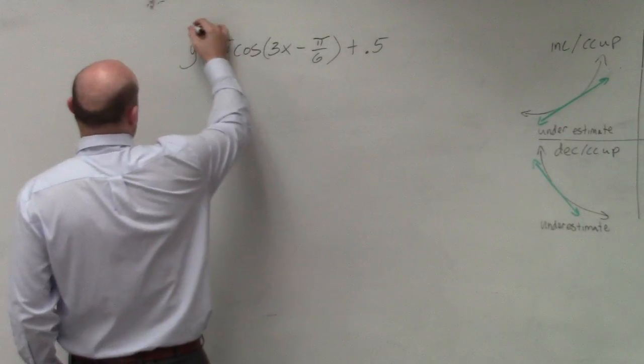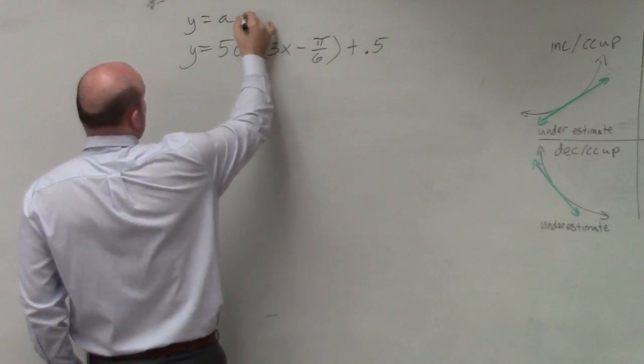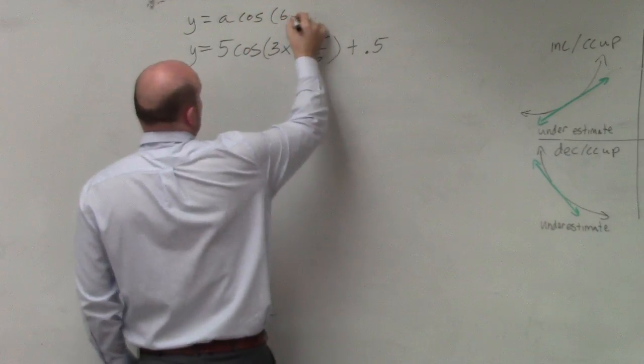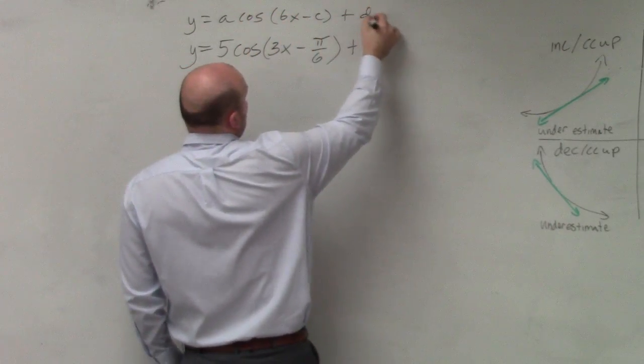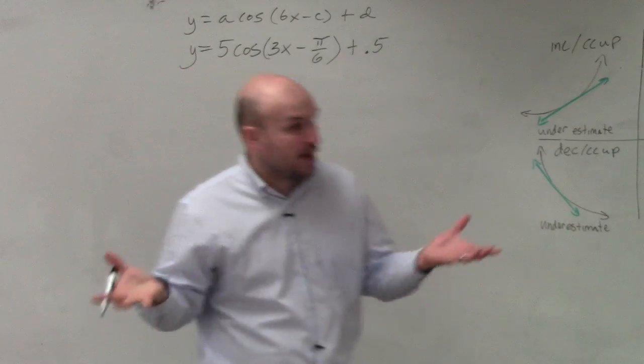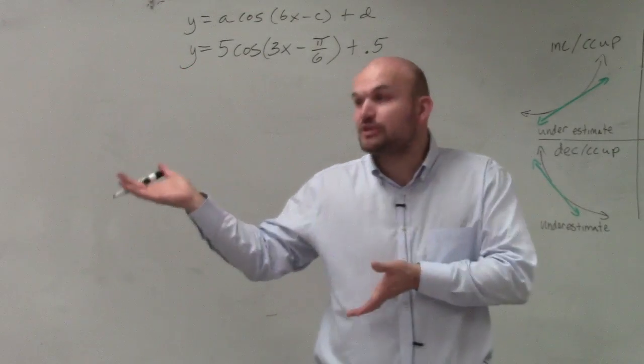So the first thing, if you remember for all of our trigonometric functions, the a, b, and the c is exactly the same, right? The only difference is our trigonometric function as well as what the graph looks like.